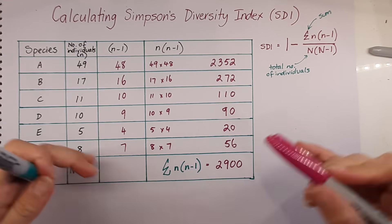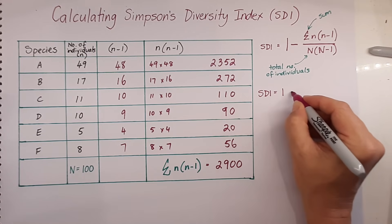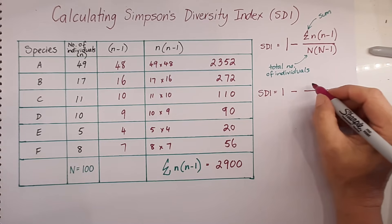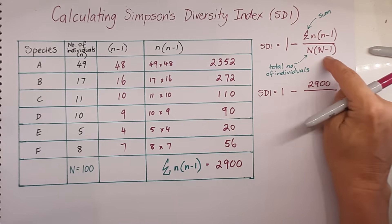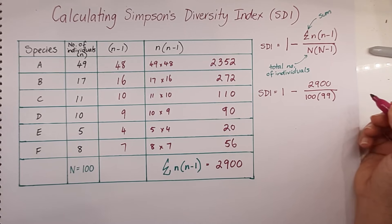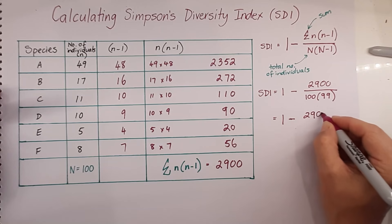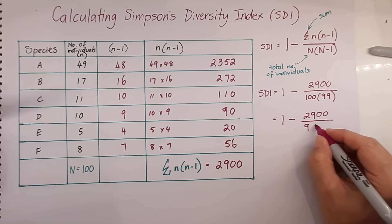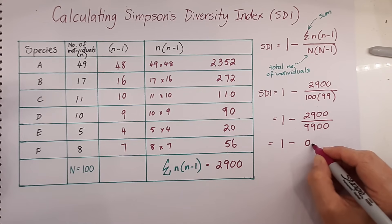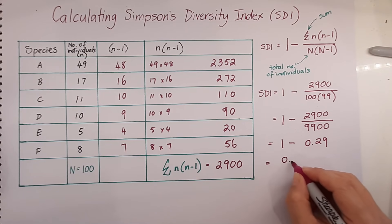So we have the information that we need in order to use our formula. So if we go back to it, we've got SDI equals 1, take away the sum of n multiplied by n take 1, which is 2,900. And we're going to divide that by 100 times 100 take 1, which is 99. So if we take that through, it's 2,900 divided by 9,900, that's going to be equal to 1, take away 0.29. So the SDI is equal to 0.71.